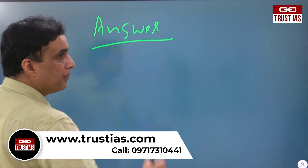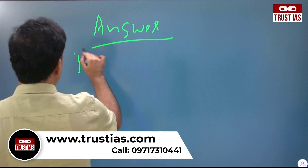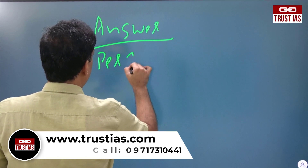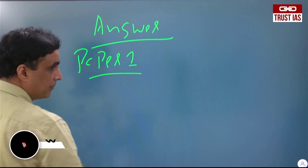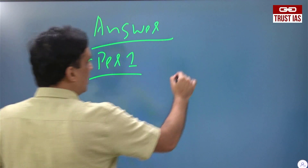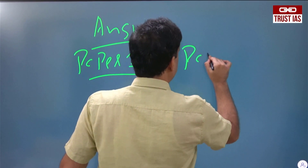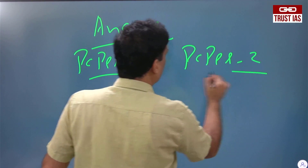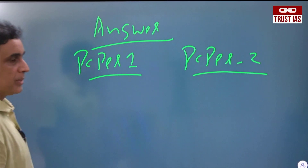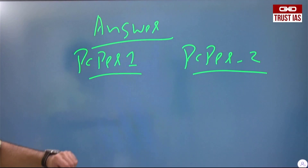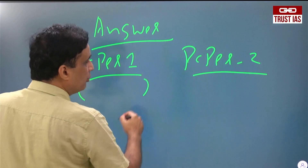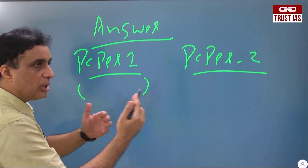First of all, when you are writing the answer of Paper 1 or Paper 2, always remember — they have not to be seen in isolation. Paper 1 and Paper 2 are not to be treated separately.